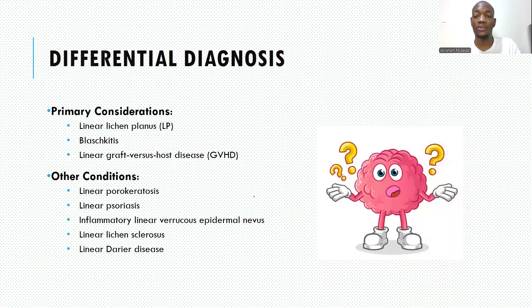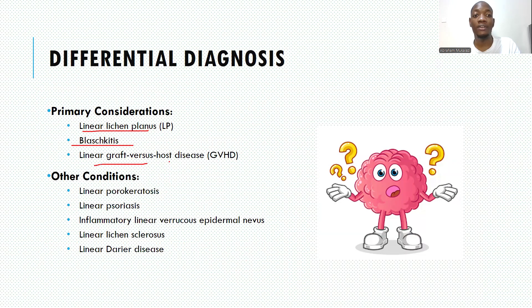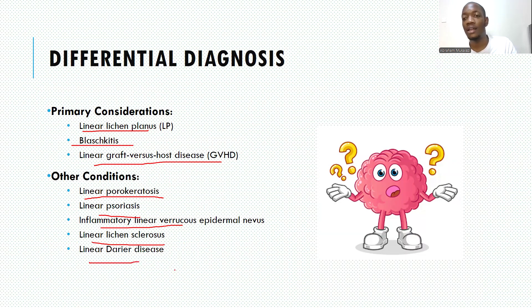The differentials include all conditions that can have a linear pattern or distribution. These include linear lichen planus, blaschkoitis (inflammation along Blaschko's lines), linear graft-versus-host disease, linear porokeratosis, linear psoriasis, inflammatory linear verrucous epidermal nevus (ILVEN), linear lichen sclerosus, and linear Darier's disease. All these are possible differentials when suspecting lichen striatus.